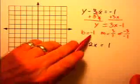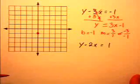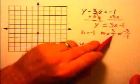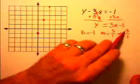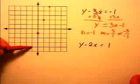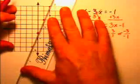To graph this, we start with the y-intercept at negative 1. The slope is up 3 to the right 1, or down 3 to the left 1. If we've done it right, we should have a line, and we do.